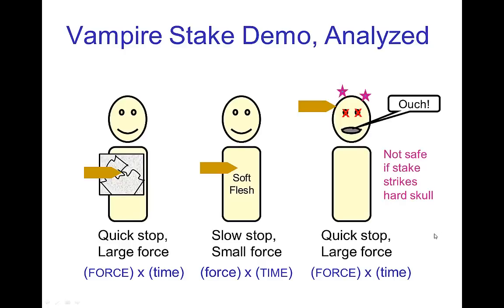A way of doing this demonstration that would not be safe would be if instead of putting it on the soft part of my chest, I put it on my skull. Then it would be like the ceramic tile — the stake would have to stop quickly because it would be on the bone, and the force again would be large.